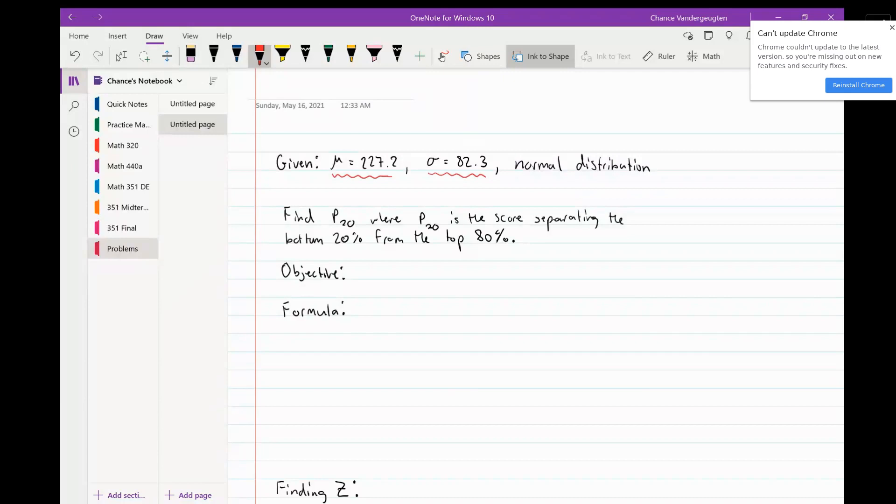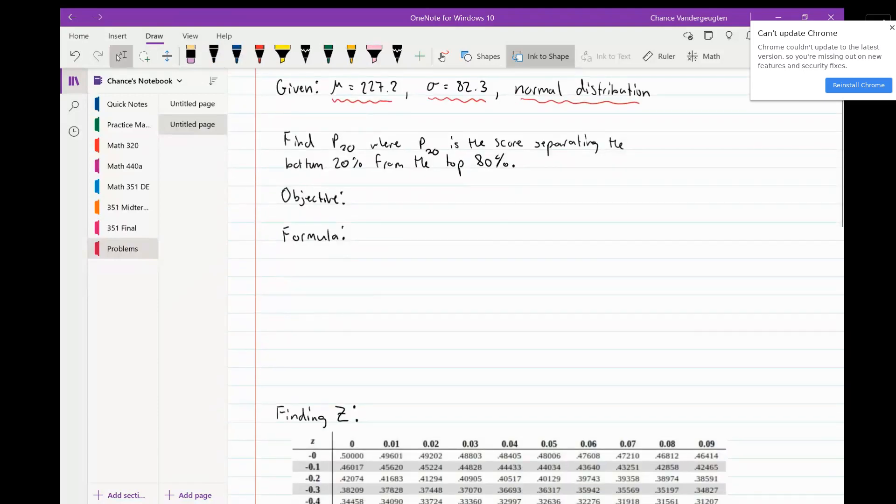Another really important fact is that the distribution is normally distributed. If it wasn't, we wouldn't be able to use this technique. The question asks to find P20, the score separating the bottom 20% from the top 80%, which is just another way of saying find the 20th percentile.